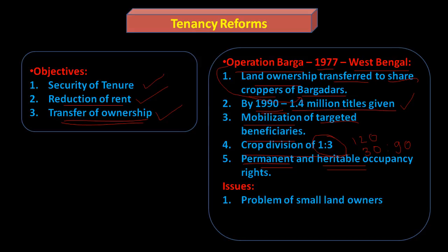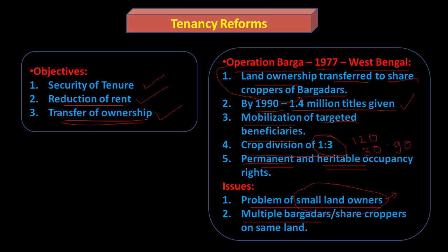The issues Operation Barga faced included the problem of small land owners, who were themselves very poor and kept tenants because their lands were far away — so tenancy laws could harm these small land owners. Another issue was multiple Bargadars on the same land: some owners gave the same land to person A in one season and to person B in the next. If the government wanted to make someone the owner, both A and B had equal rights having worked six months each. Dividing the land would create an uneconomic holding that is too small to cultivate — so this was a major issue.